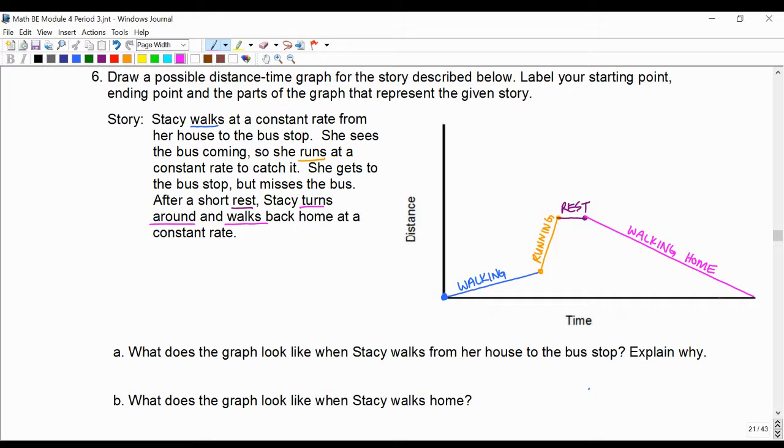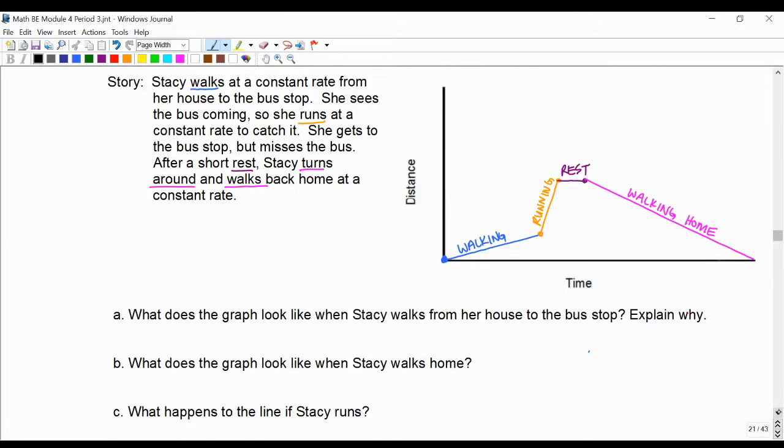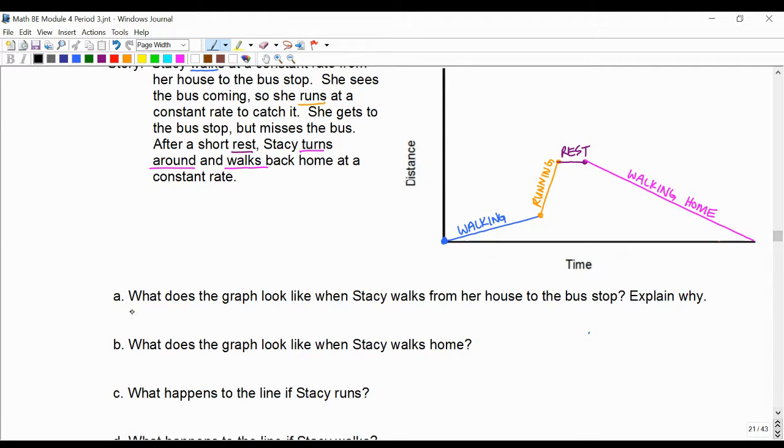And we're going to answer some follow-up questions. By the way, answers for this picture could vary, but we're looking for an end result or sketch that looks similar to this. What does the graph look like when Stacy walks from her house to the bus stop? So we'll say something like the line goes, well, I notice it goes up.